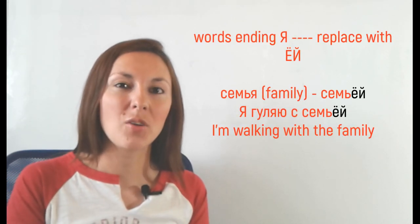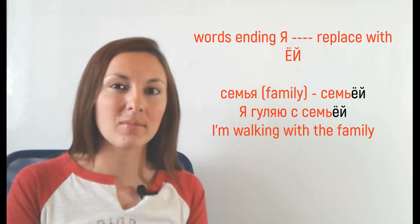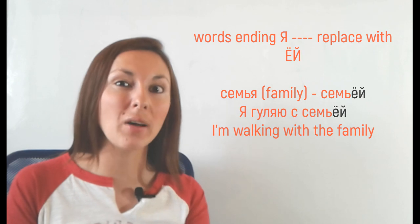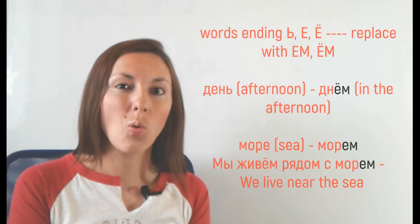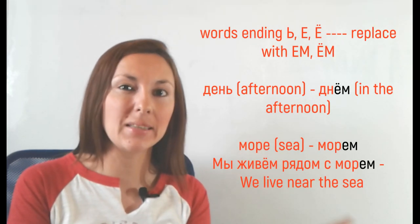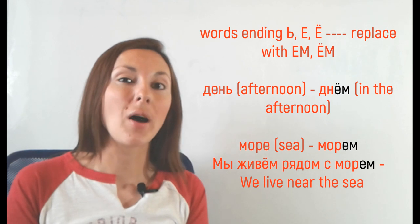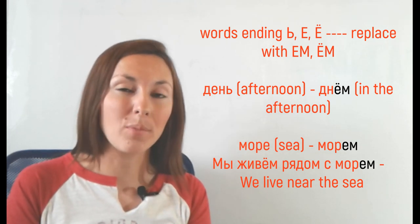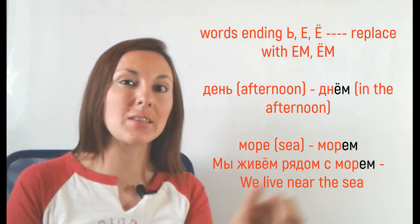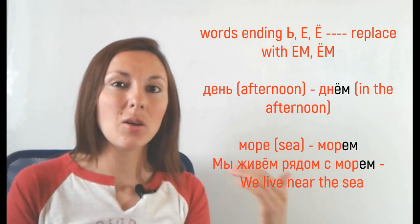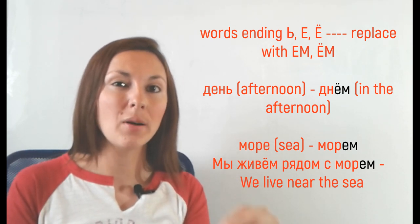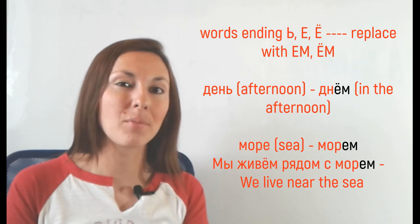If the noun ends Я, like СЕМЬЯ, replace Я with ЁЙ. Like Я ГУЛЯЮ С СЕМЬЁЙ. For the words with the soft sign, like ДЕНЬ or Е or ЙО, like МОРЕ, we change it into ЕМ or ЙОМ. So, how to say in the afternoon? ДНЁМ. How to say we live near the sea? Мы живём рядом с МОРЕМ.